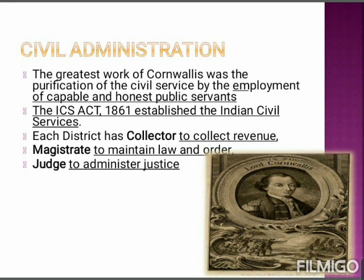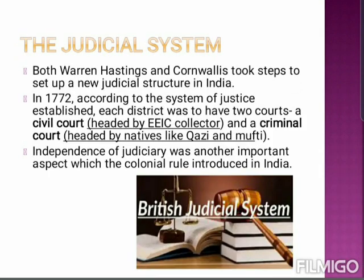Moving to the judicial system of India — prior to British rule, the administration of justice was carried out on the basis of traditional laws of the Indian people. Both Warren Hastings and Cornwallis took steps to set up a new judicial structure in India. In 1772, according to the system of justice established, each district had to have two courts: a civil court headed by the East India Company Collector, and a criminal court headed by natives like the Qazi and Mufti. Independence of the judiciary was another important aspect which colonial rule introduced in India, meaning the judiciary was free from the influence of both political and civil administration.